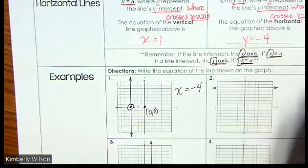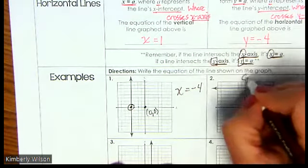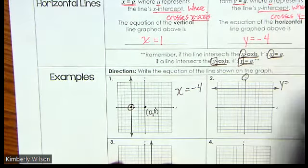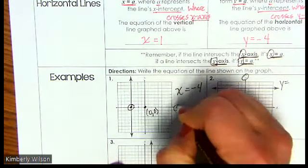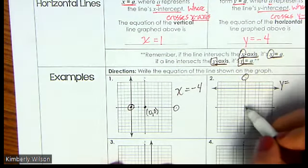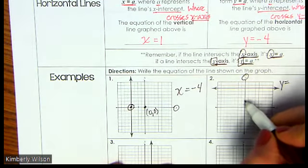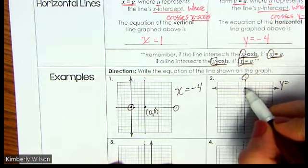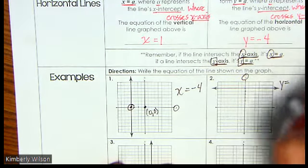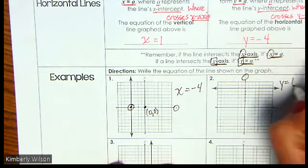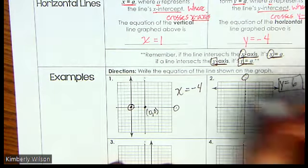Number two — this one is crossing the y-axis, so we know it's going to be y equals. Where is it crossing? 1, 2, 3, 4, 5, 6 — and this is the positive value, so this is y equals 6.